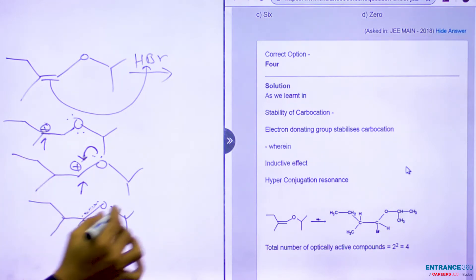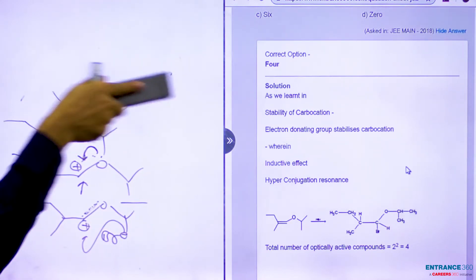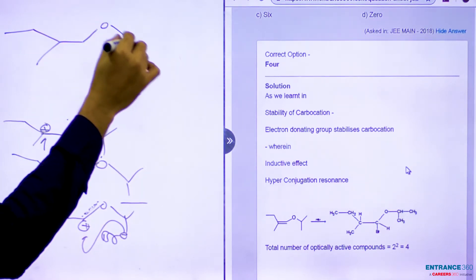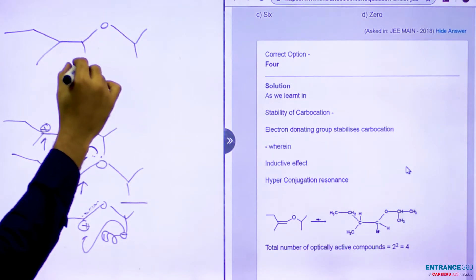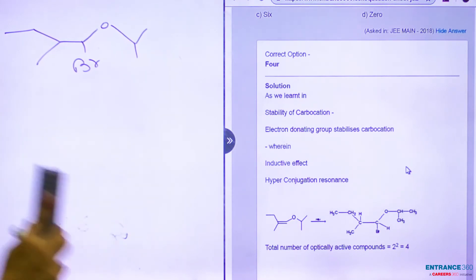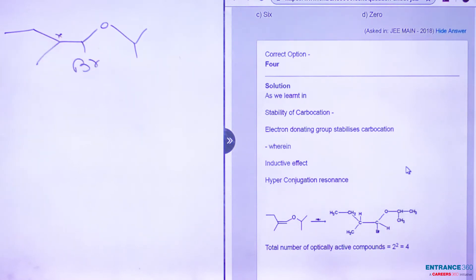Then the bromide will attack here and it will form a compound with haloalkane and ether. This is our final compound. We can see here this is a chiral carbon and this is a chiral carbon. There is one H and there is one H.